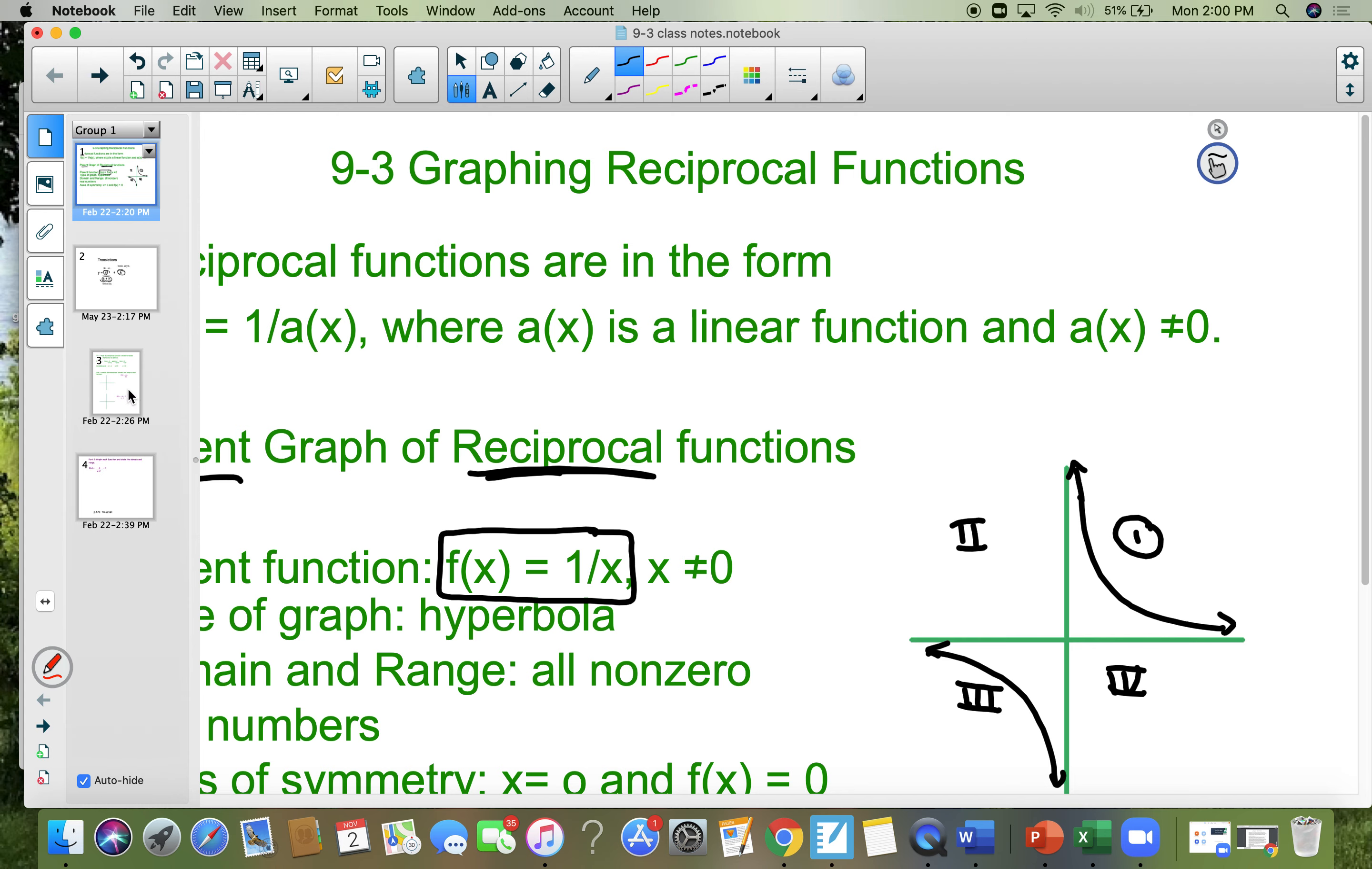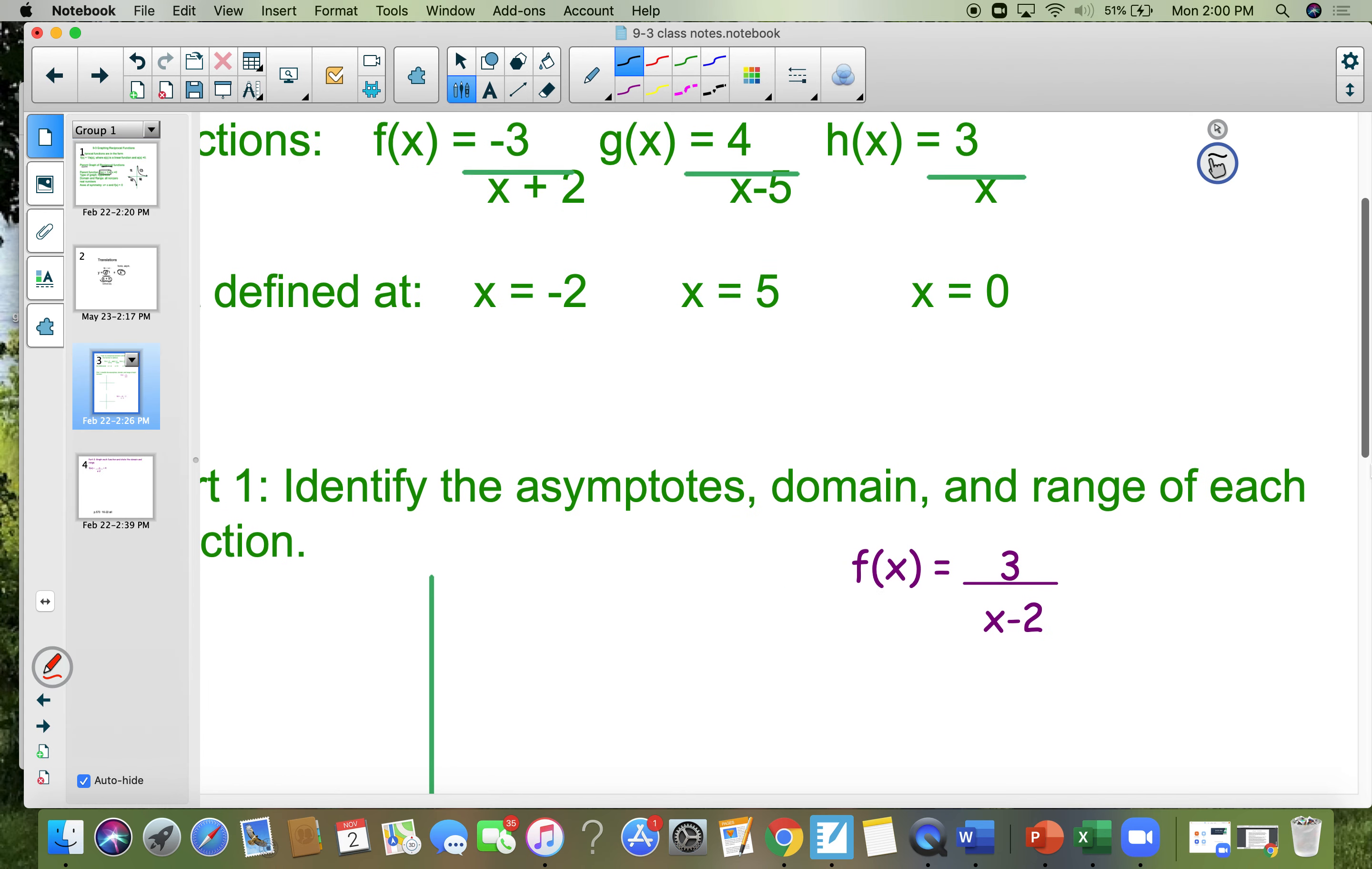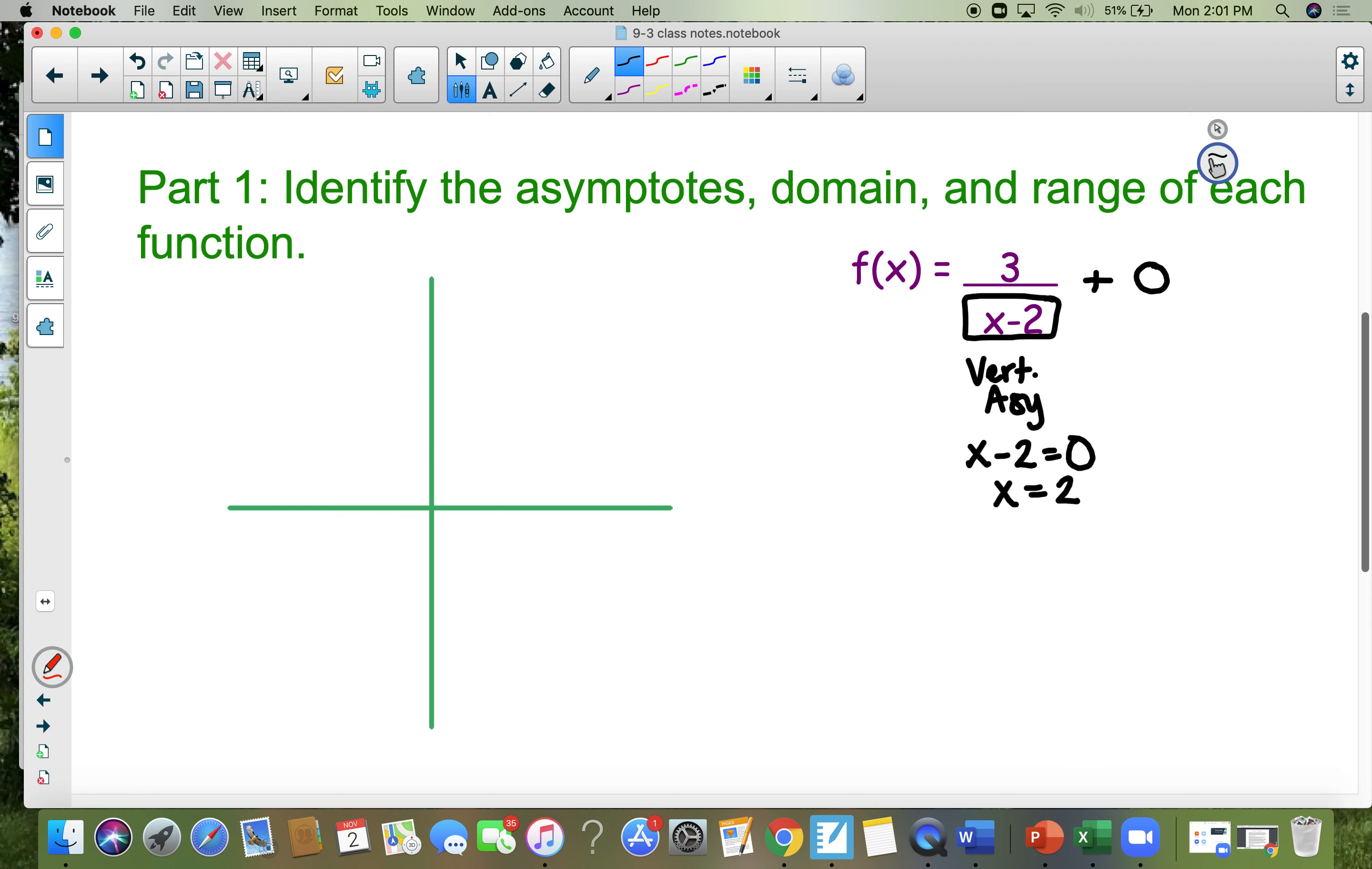Okay, let's just do some examples because it's kind of confusing looking at them. So here's the first one. F of x is equal to 3 divided by x minus 2. So there's supposed to be a plus 0 at the end of this. This down here is the vertical asymptote. So all you do is you set it equal to 0 and solve for x. So at x equals 2 is a vertical line. So put a vertical line at x equals 2.